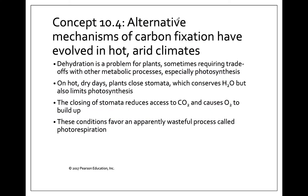There are several mechanisms of carbon fixation that have evolved to deal with hot and arid climates. Plants are very prone to dehydration — they lose something like 95% of their water through their leaves. Plants in the middle of a desert, like a cactus, or in really tropical environments like pineapples, have to deal with losing a lot of water on really hot, dry days. When it's very hot, they close their stomata — the openings on the bottom of the leaf — which saves water but also limits photosynthesis because CO2 can't enter.